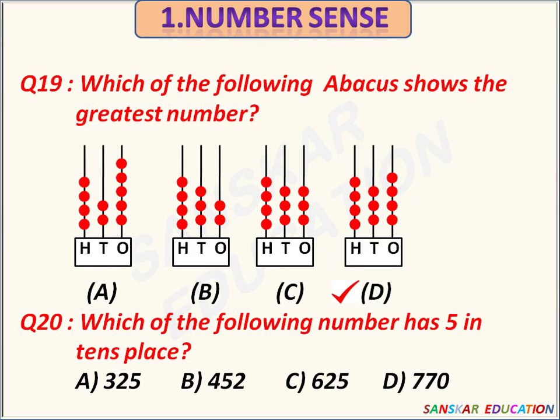Which of the following numbers has 5 in the tens place? Options are 325, 452, 625, 770. 452 has 5 in the tens place. Option B is the correct answer.